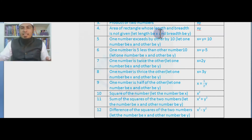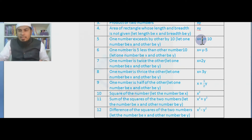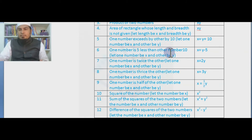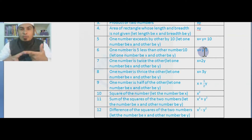One number exceeds the other by 10: x = y + 10, because exceeds means plus. One number is five less than the other: x = y − 5. You can identify where 'is' appears in the English mathematical statement — that word 'is' becomes the equals sign in algebraic form.